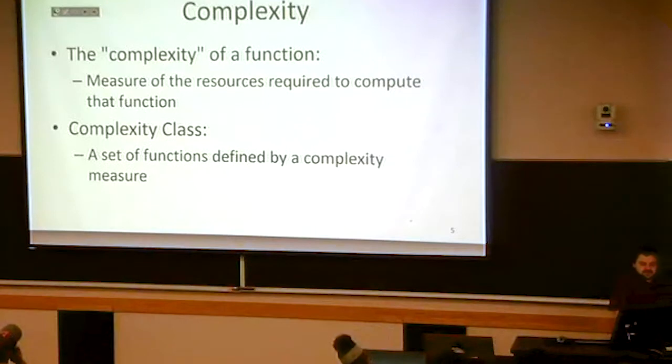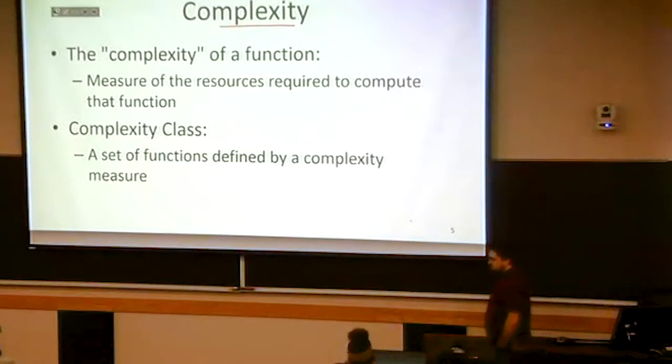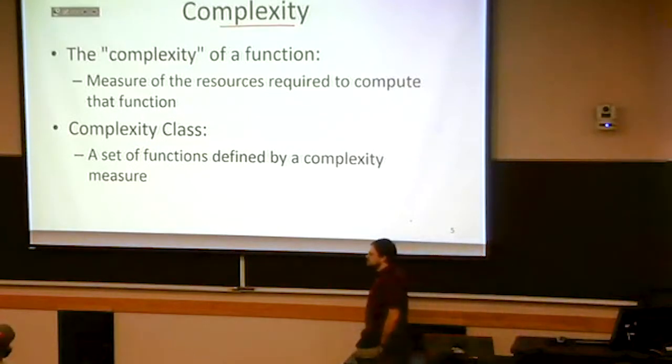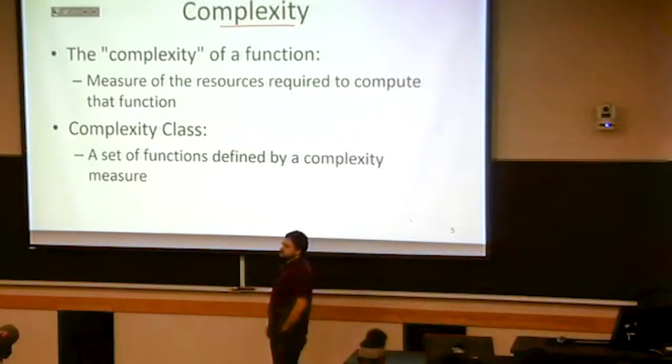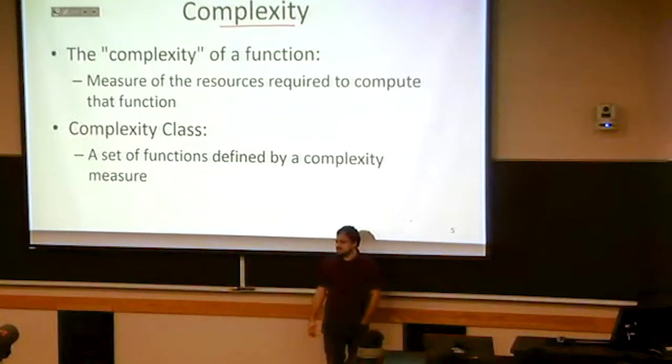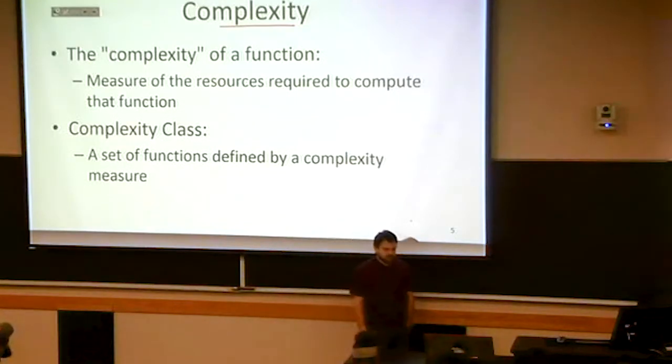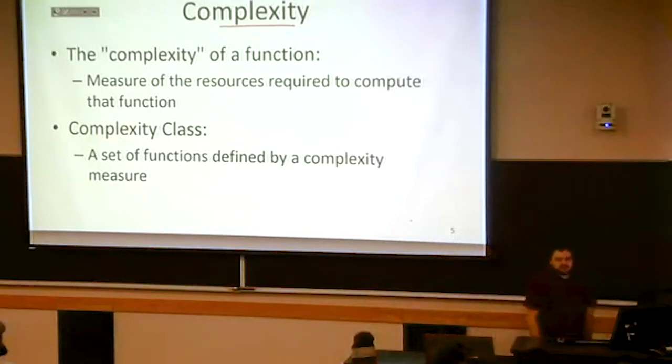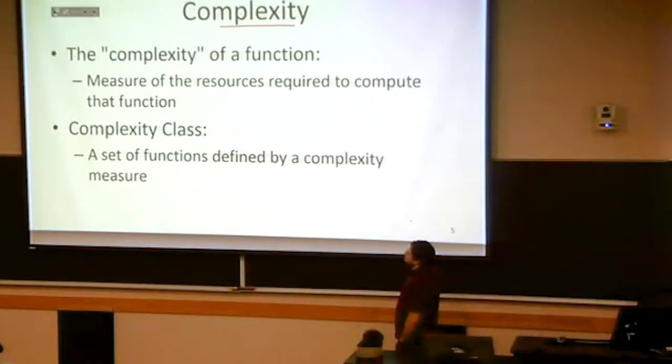The way we're going to do this is we're getting into something called complexity. There are two major themes of this course: computability and complexity. Computability says what can I do with a certain model of computing. Complexity says how difficult is it or how many resources are required to do that thing under that model of computing.